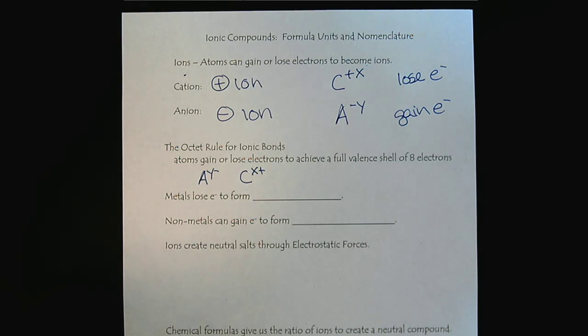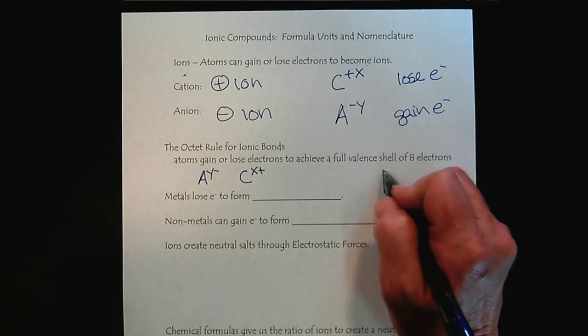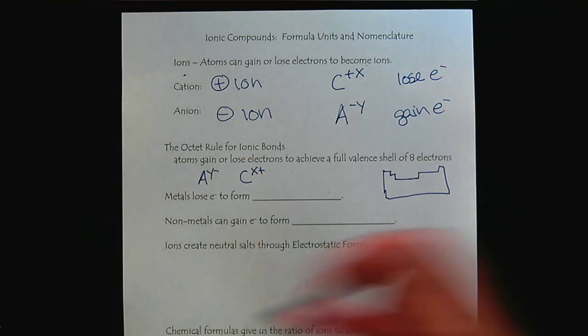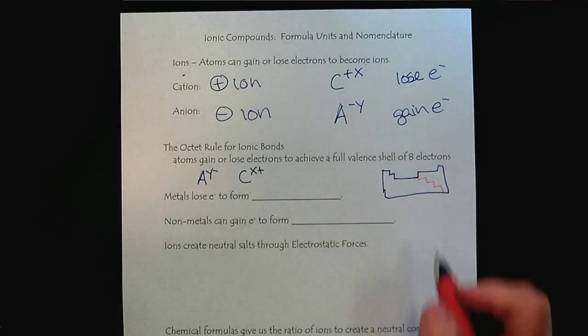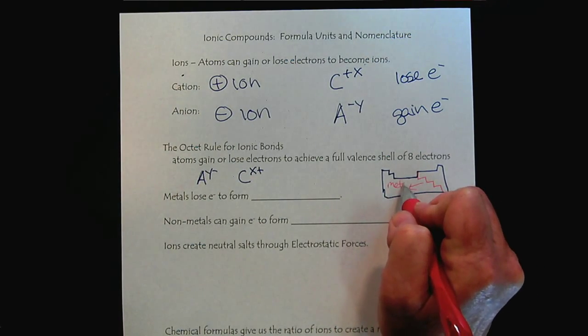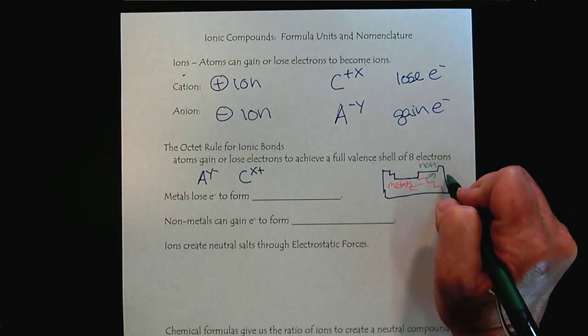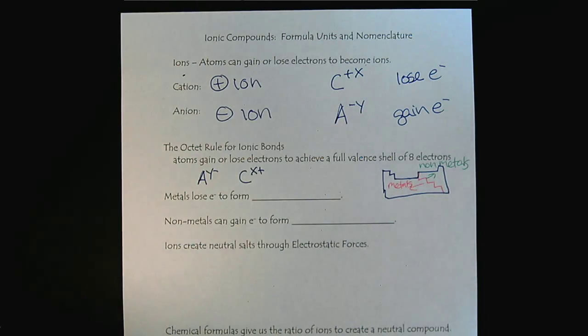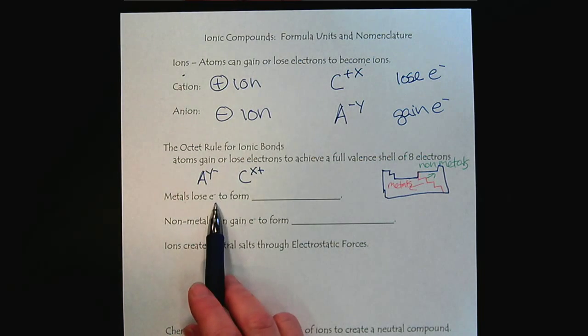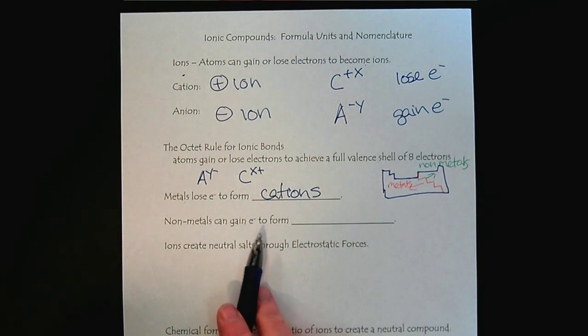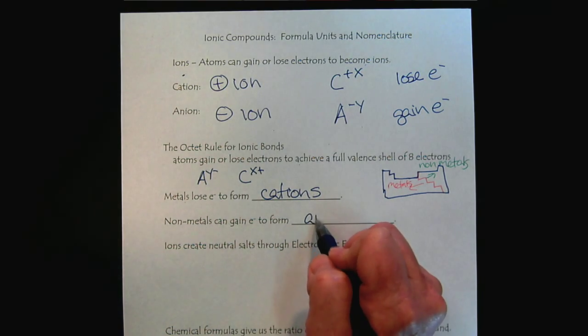And then if we tie this to our understanding of the periodic table with the stair step line, so if we look at the periodic table, we should always see the stair step line that separates the metals from the non-metals. And so that helps us to predict the type of ions that will form. Metals like to lose electrons to form cations. Non-metals like to gain electrons to form anions.